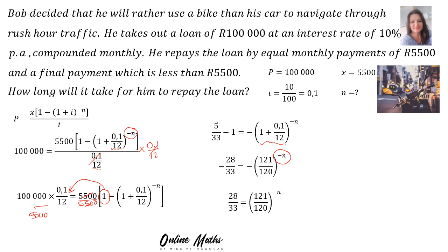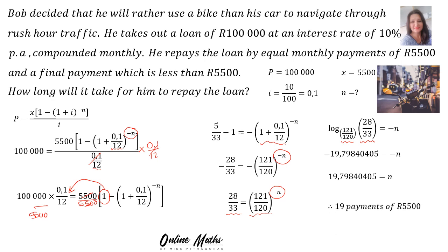We divide away the minuses first, then convert into log form. The base of the exponent stays the base of the logarithm. The number on its own will stand with the logarithm, and we make the exponent the subject of the formula: negative N. When you slot that into your calculator, you find negative N equals negative 19.798. Remember, you keep the decimals. Dividing away the minus, therefore there are 19 payments of 5,500 Rand and one payment less than 5,500.